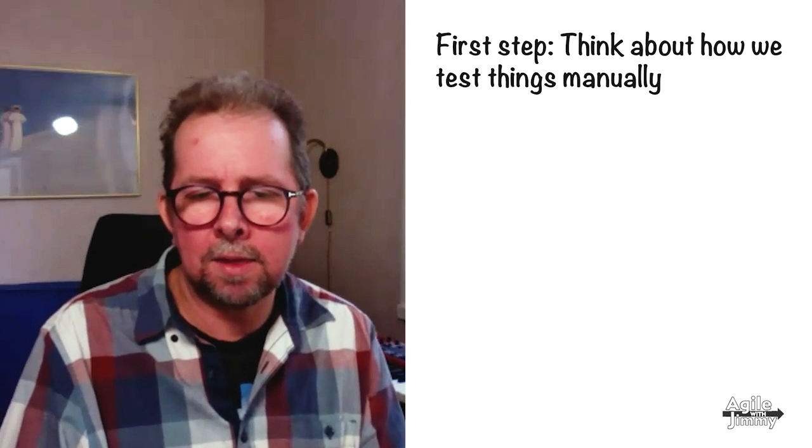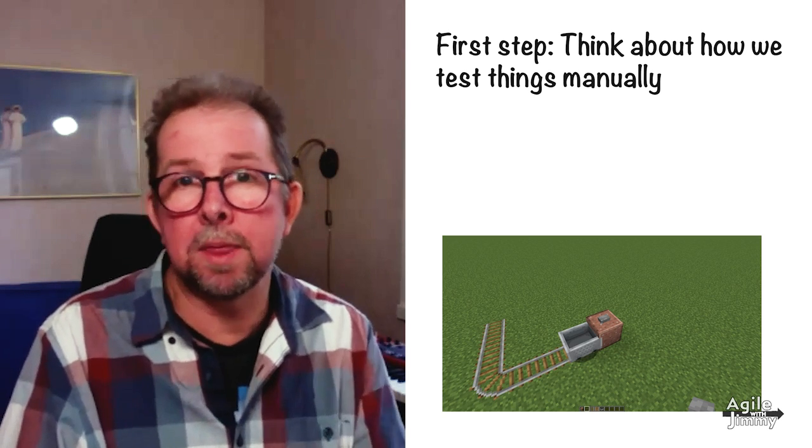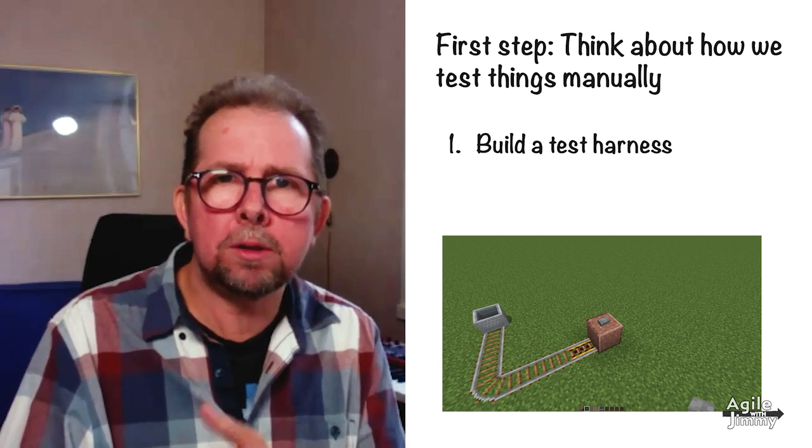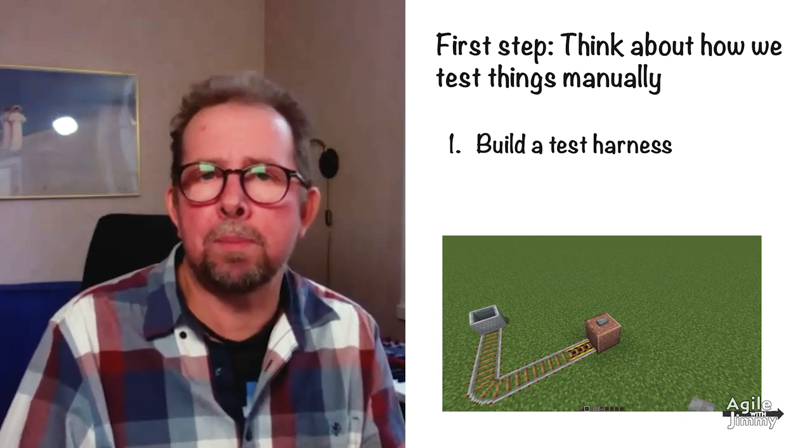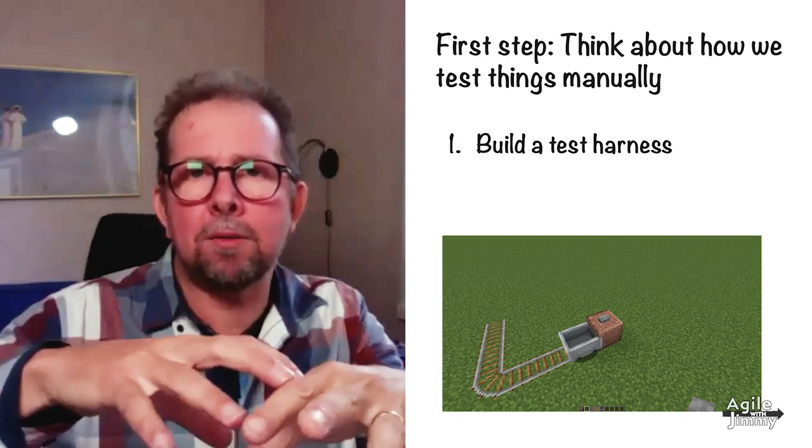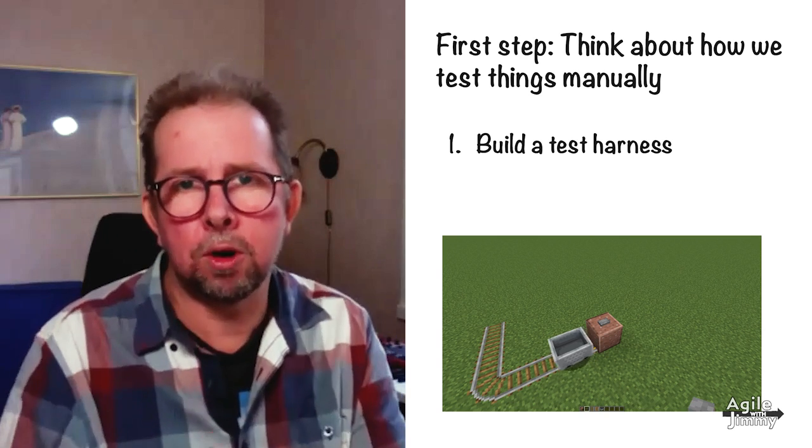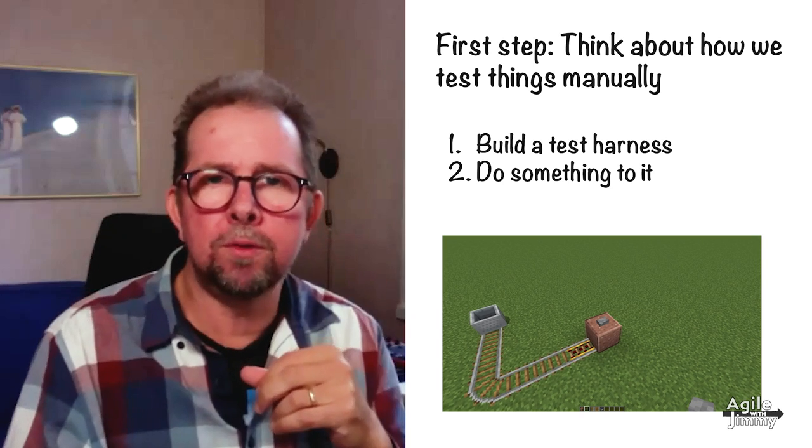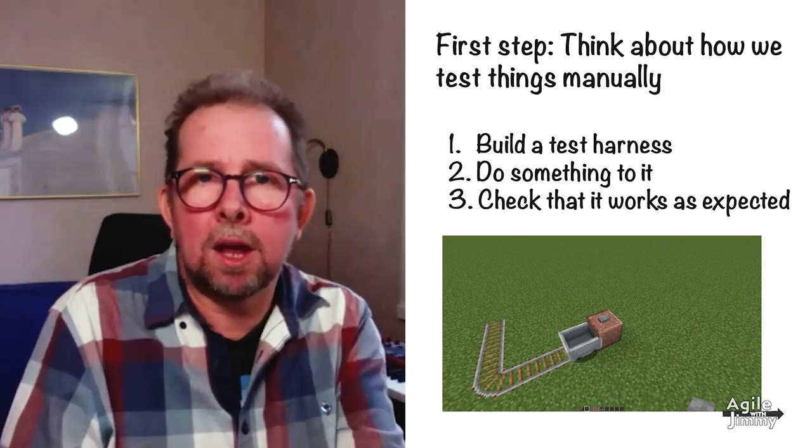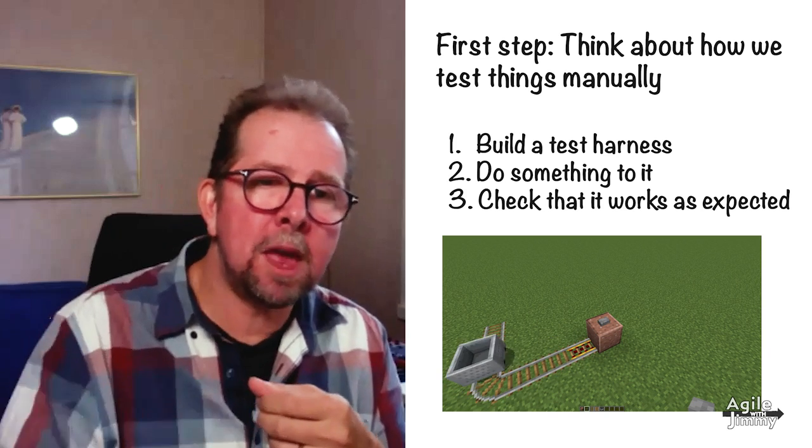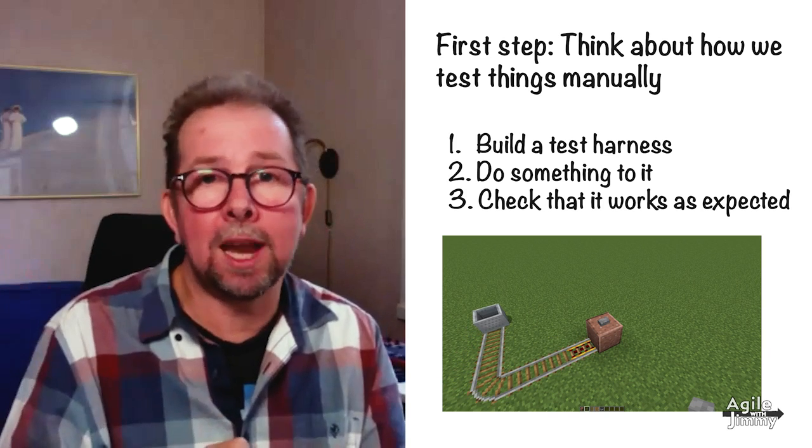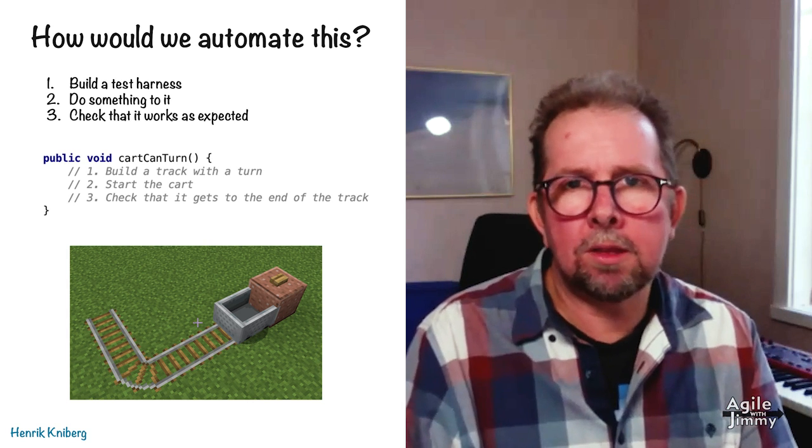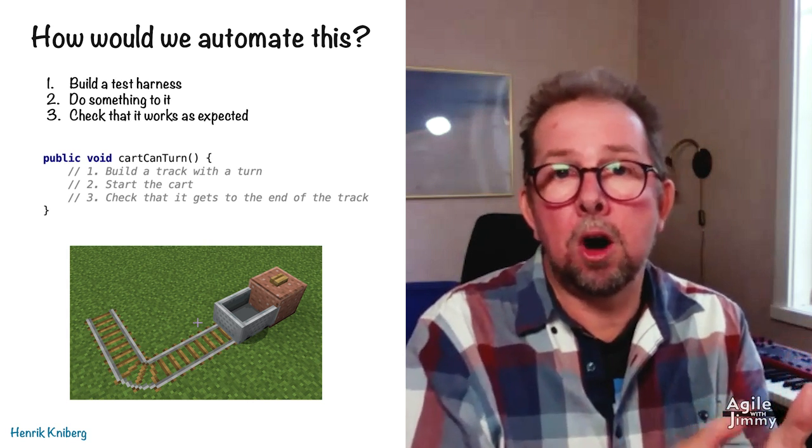Let's say the case of the mine cart that couldn't turn corners. Whenever we have a problem, we build some kind of test harness. This is what we do all the time. We build up some kind of structure in Minecraft to replicate the bug. And then we do something to that structure. In this case, I press a button and then the cart moves. And then I observe and check that what happened should happen. So this is the basic skeleton of any kind of testing framework anywhere. Manually, this is what we do. Let's use that as a template. We want to do this, but automatically.